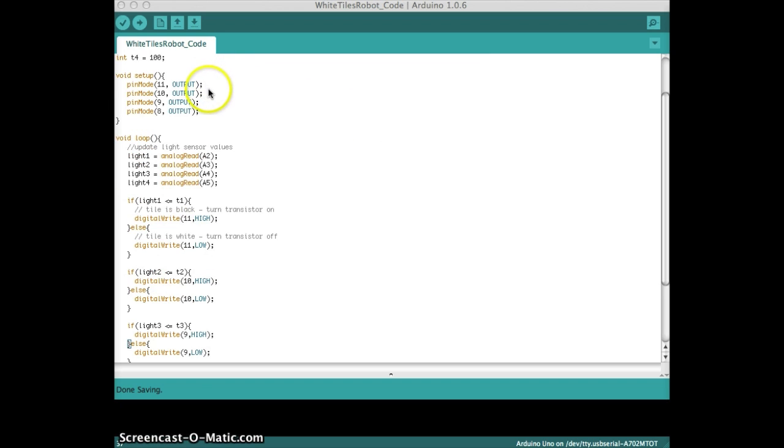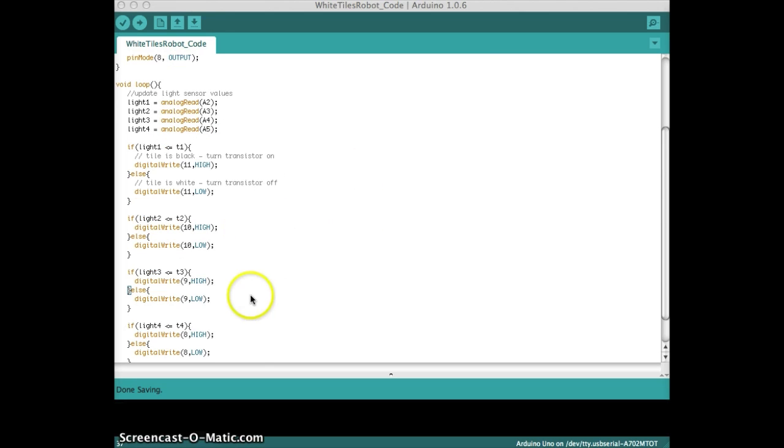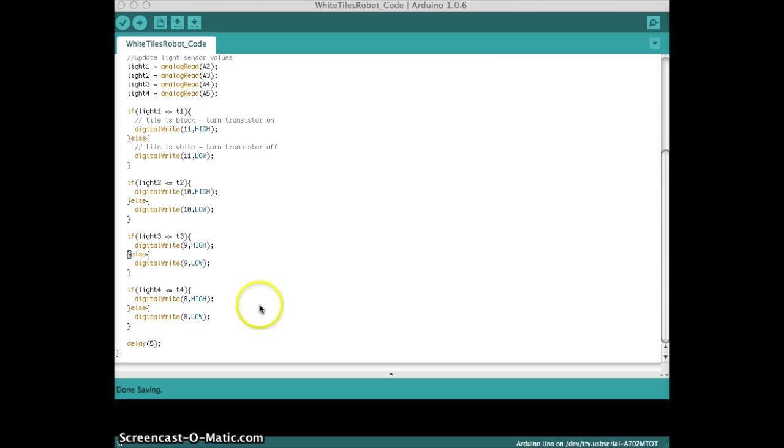And in our void loop, all I'm going to do is update the sensor values and then test each of those values with its respective threshold. After testing that, if the tile is black, then the Arduino turns the transistor on with a simple digital write high. And if the tile is white, then turn the transistor off. It repeats that three more times, four in total. And then we have a small delay at the end.